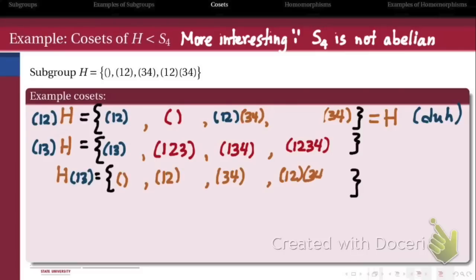And what's interesting about this example is it turns out that if I operate by (1,3) on the right of H, instead of on the left of H, and then I simplify, that actually the result turns out to be different. In other words,